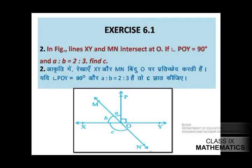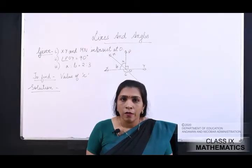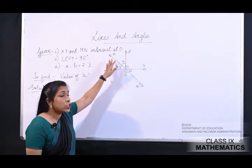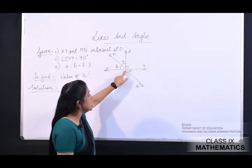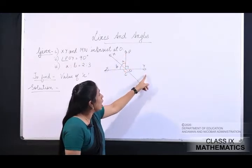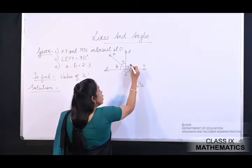This is question number 2. In the figure, lines XY and MN intersect at O. If angle POY is equal to 90 degree and A is to B is equal to 2 is to 3, find C. Given: XY and MN intersect at O, angle POY equals 90 degree, A to B equals 2 to 3. Whenever you have a ratio, let A equal 2x and B equal 3x.